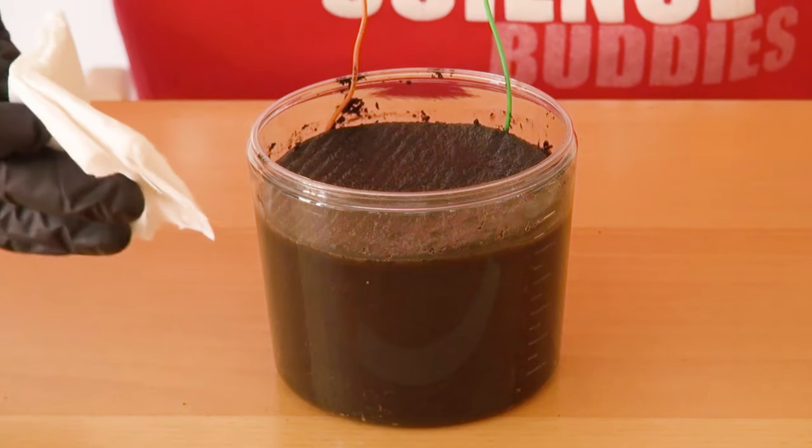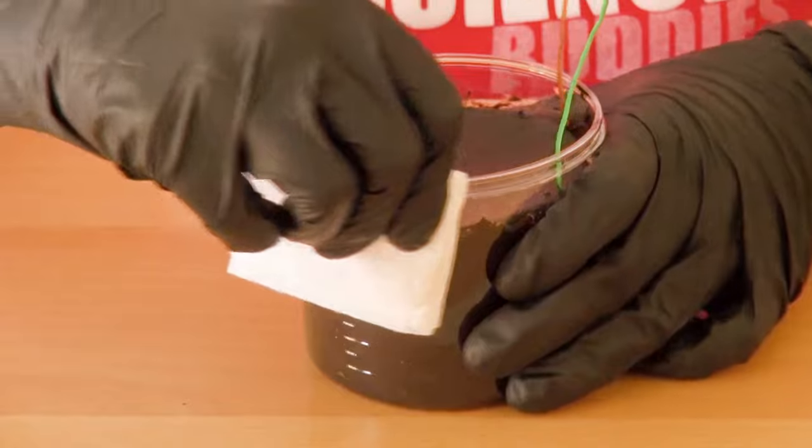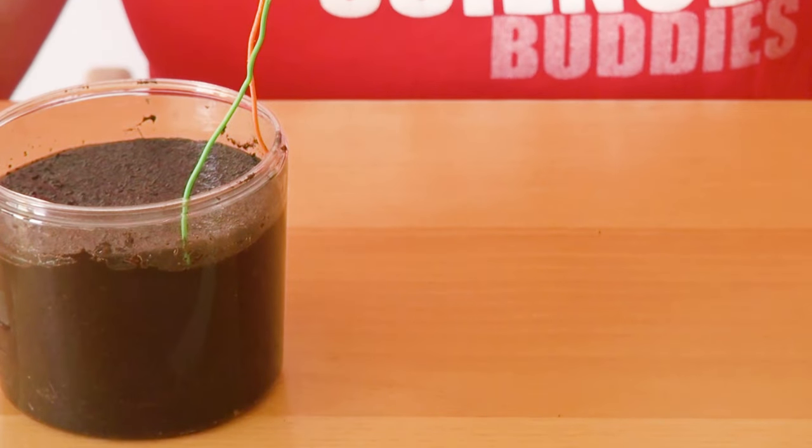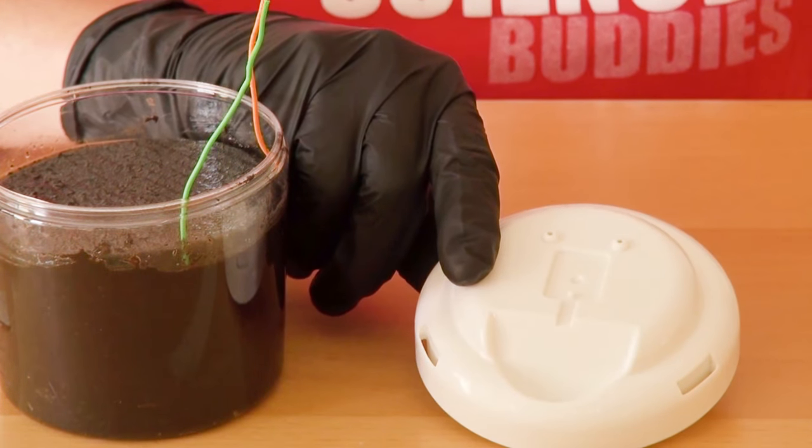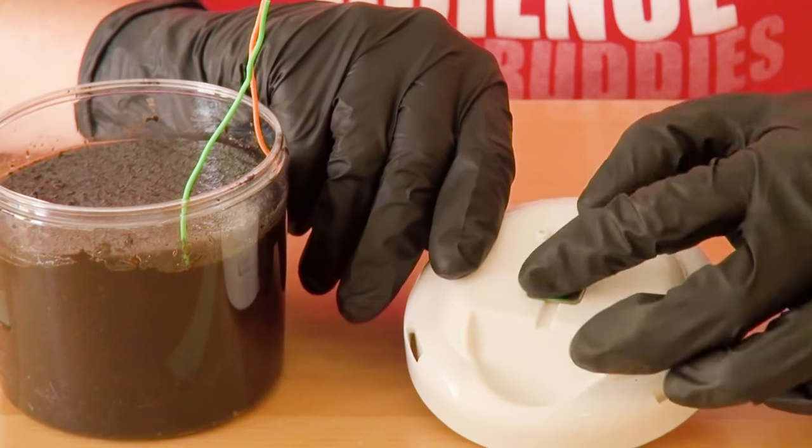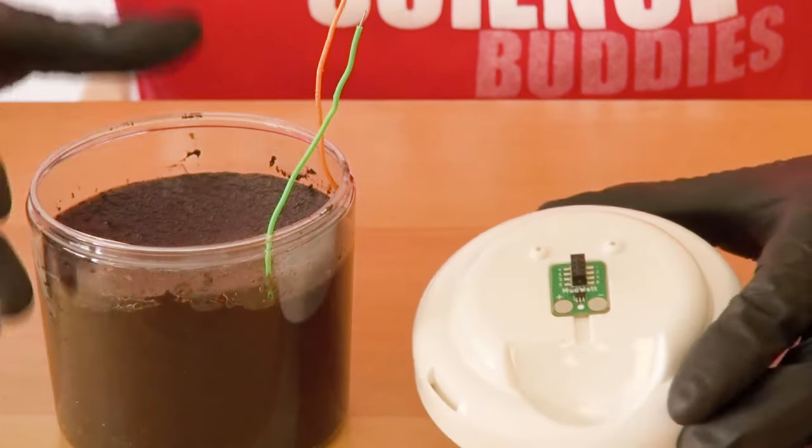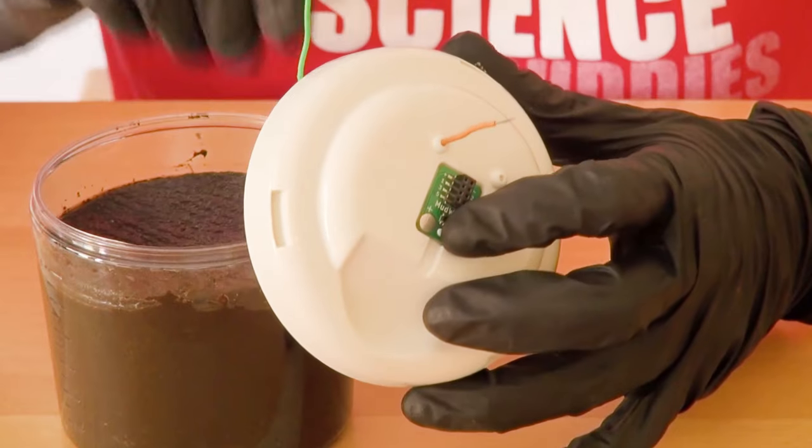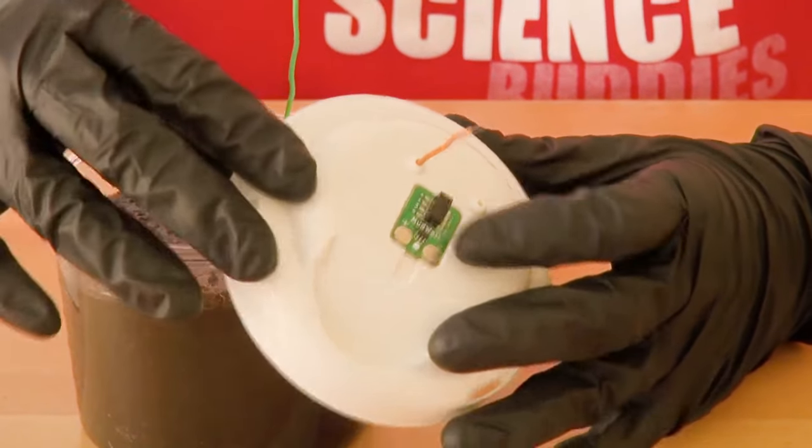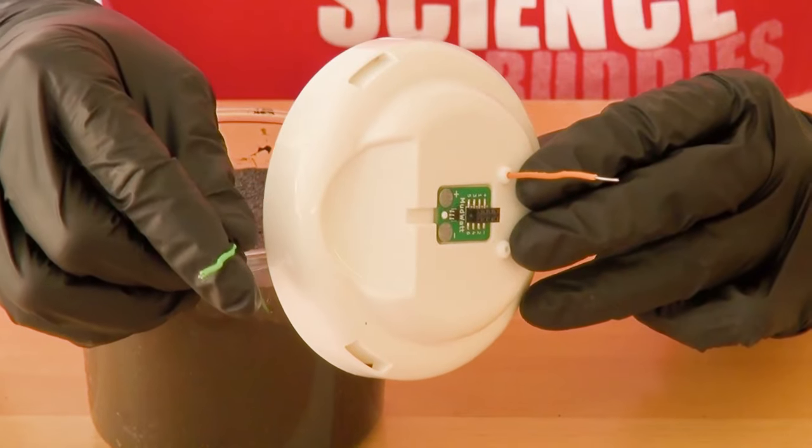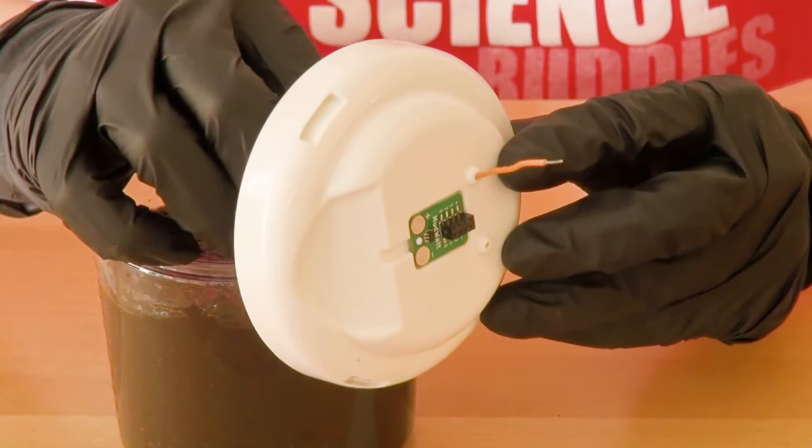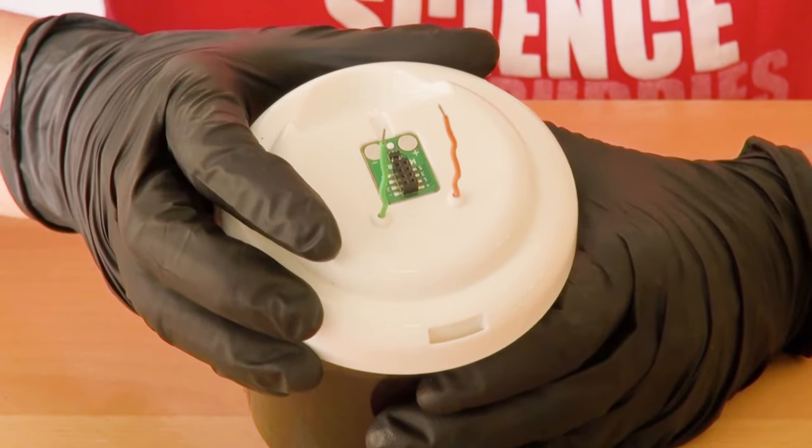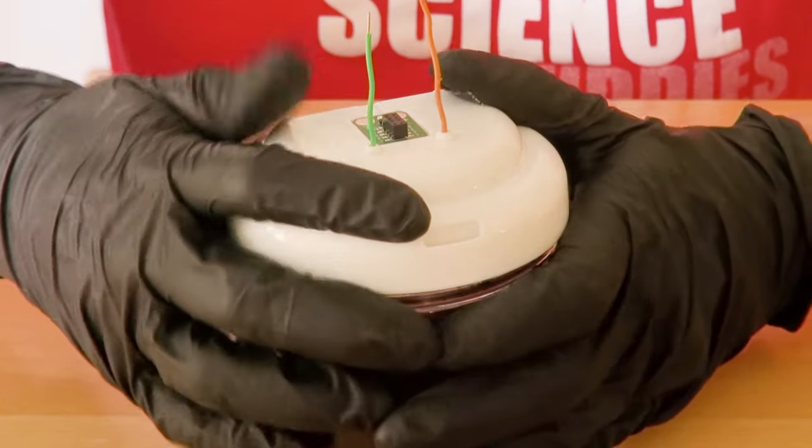Before you close the microbial fuel cell, take a paper towel and clean any dirt from the rim of the vessel. Then take the lid and the green hacker board and insert it into the indented area. Next, take the orange wire that comes from the cathode and insert it into the hole that is closer to the plus sign. Next, take the green wire that comes from the anode and insert it into the hole that is next to the minus sign. Press the lid firmly on top of the vessel until it snaps into place.